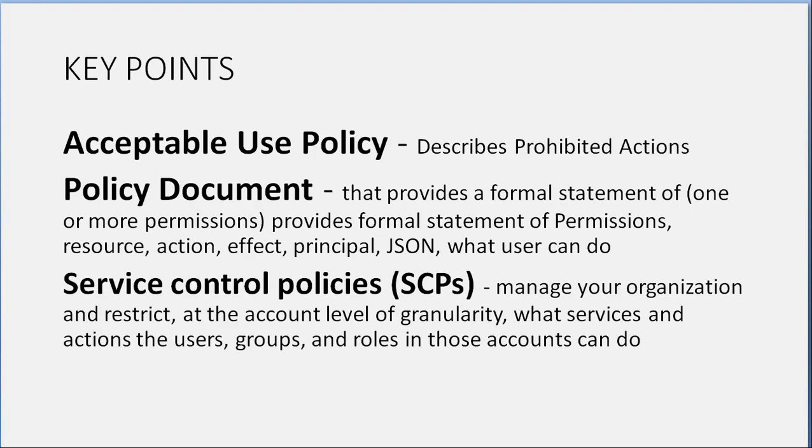Acceptable Use Policy: describes prohibited actions. A policy document provides a formal statement of one or more permissions — resource actions, effect, principals — written in JSON defining what a user can do. Service Control Policies (SCPs): manage your organization and restrict at the account level what services and actions users, groups, and roles in those accounts can perform.